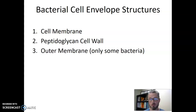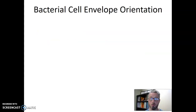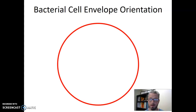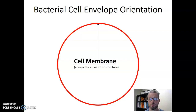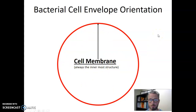The cell envelope is a pretty simple structure. It contains three elements: the cell membrane, the peptidoglycan cell wall, and the outer membrane. So let's think about the orientation in which these structures are put together. We start with the cell membrane — every cell requires it because it controls what gets into and out of the cell. This is the innermost structure of the cell envelope, surrounding what would be the cytoplasm inside the cell.